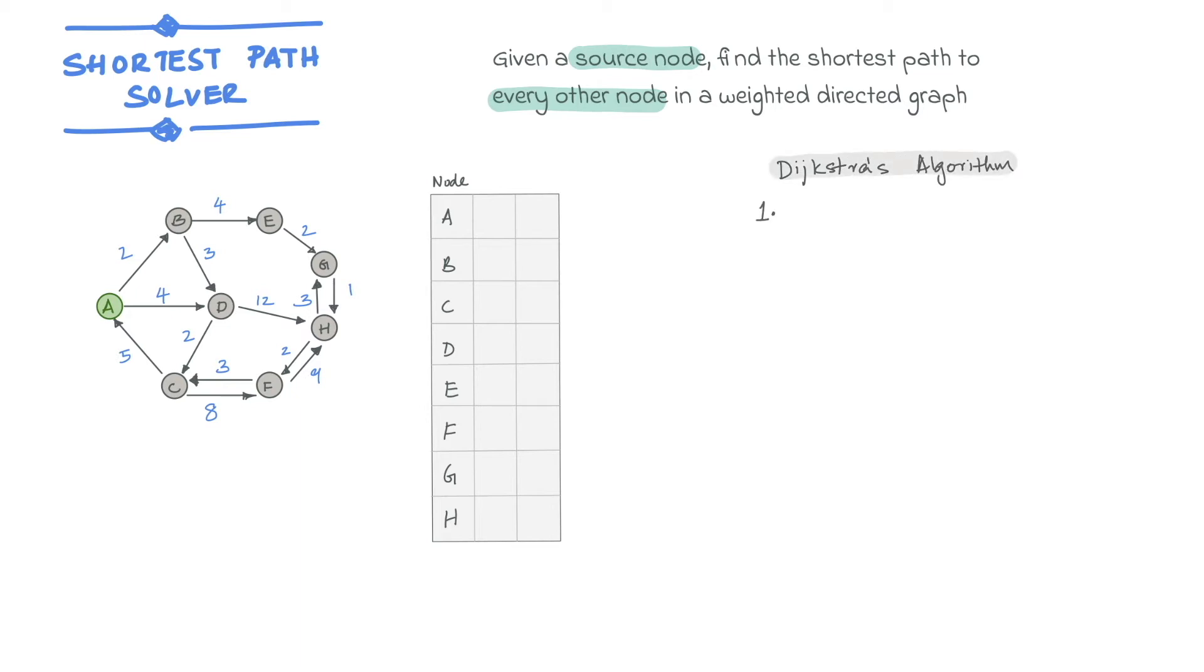The first step is to initialize the distance values. The distance to the starting node is set as 0 and those to all other nodes is set to infinity.